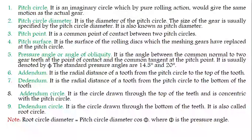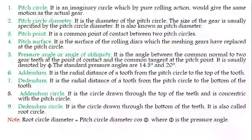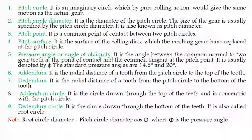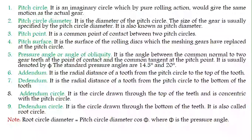Pitch point is the common point of contact between two pitch circles. When two gears are mating, the common mating point of the two pitch circles is called the pitch point. Pitch surface is the surface of the rolling disc which the mating gear replaces at the pitch circle.